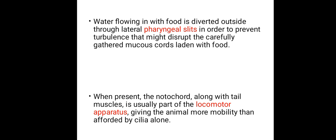Another crucial fact is that the water flowing in with food during feeding is diverted outside through lateral pharyngeal slits, in order to prevent turbulence that might disrupt the carefully gathered mucus laden with food. So they regulate the water flow. Proto-chordates are marine animals — they live in water bodies — and they control the flow of water into their body through the lateral pharyngeal slits.